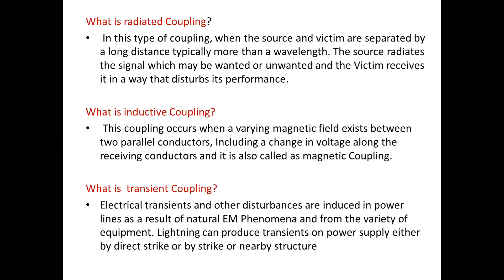In radiated coupling, when the source and the victim are separated by a long distance — typically more than a wavelength — the source radiates a signal (which may be wanted or unwanted) and the victim receives it in a way that disturbs its performance. In inductive coupling, this coupling occurs when a varying magnetic field exists between two parallel conductors, inducing a change in voltage along the receiving conductor; it is also called magnetic coupling.